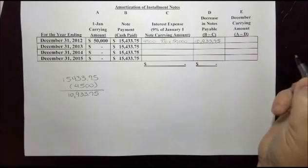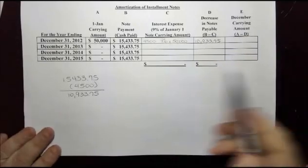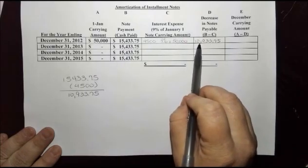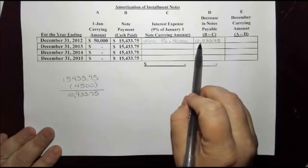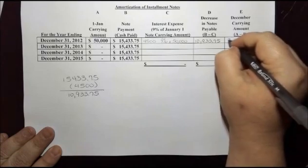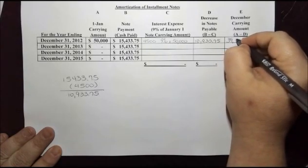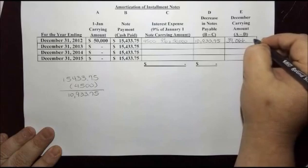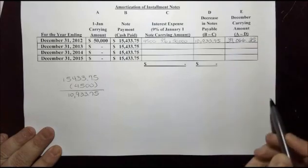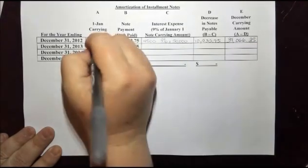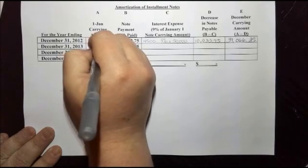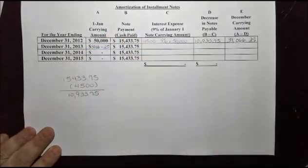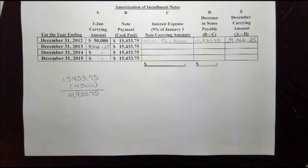That leaves us with an end-of-year carrying amount. We take $50,000 minus the principal decrease, which gives us $39,066.25. We're going to bring that $39,066.25 forward to the next year.